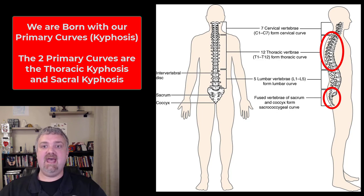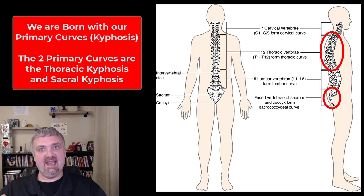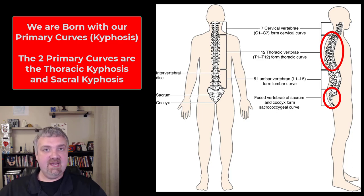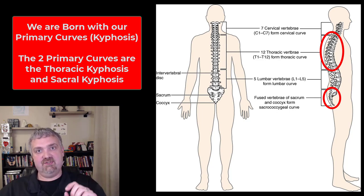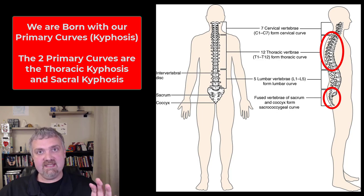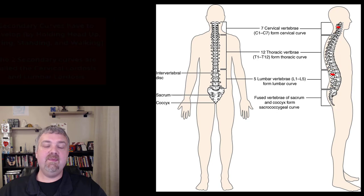The two curves that stay that way are going to be your thoracic curve, which is also called the thoracic kyphosis, and the sacral curve, because you're already in that position. So your primary curves are going to be your thoracic curve and your sacral curve, and they are going to be a kyphosis.